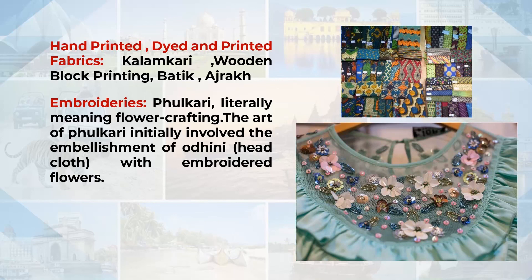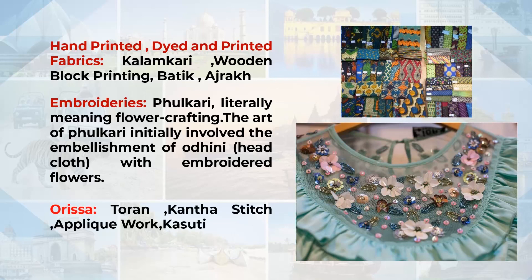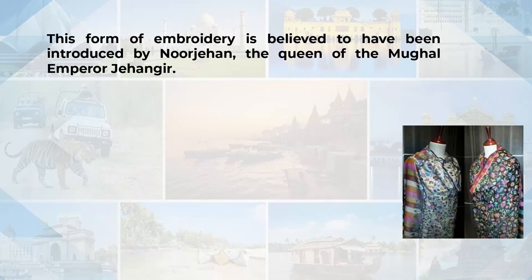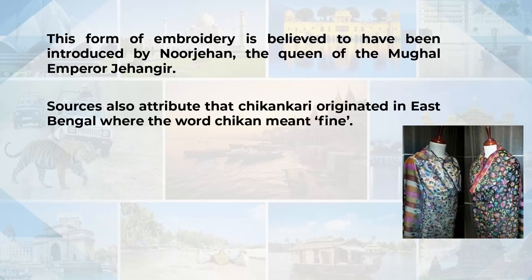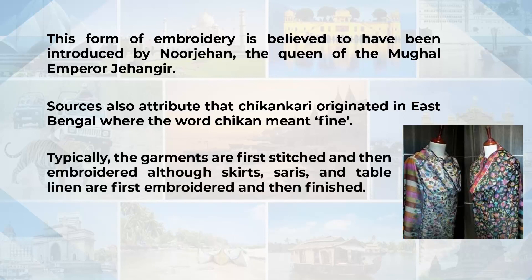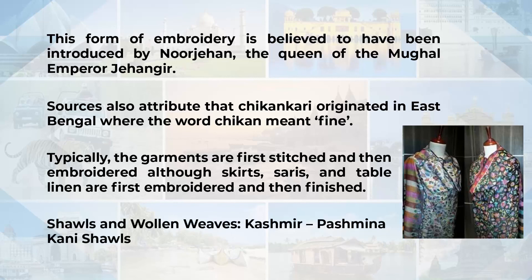The embroideries popular all over India include first the phulkari, which means flower crafting. This art initially involved embellishment of the odini, the head cloth, embroidered with flower patterns. Over time the craft became complex and heavily embroidered odinis called baag prints — garden prints — came into vogue. Odisha is also popular for Torun's applique work. This form of embroidery is believed to have been introduced by Noor Jahan, the Queen of Mughal Emperor Jahangir. Another popular embroidery is kasuti. Chikankari is said to have originated in East Bengal where the word chicken meant fine. Garments are first stitched and then embroidered — skirts, sarees and table linen were also embroidered. The shawls and woolen weaves are popular from Kashmir, called pashmina kari shawls.